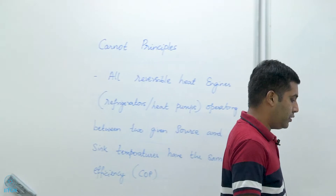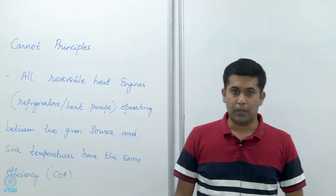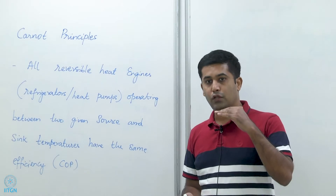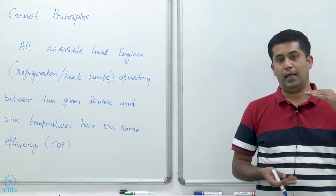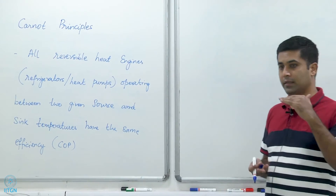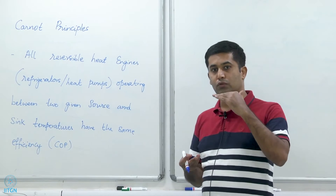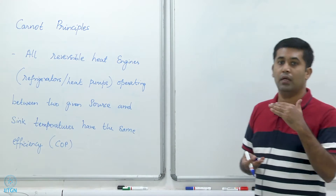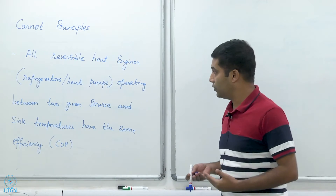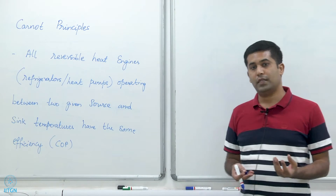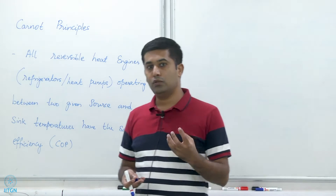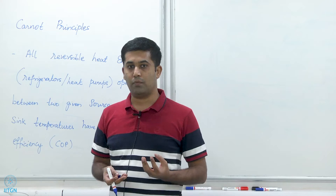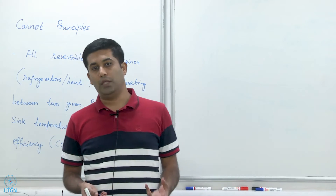All reversible heat engines that operate between two reservoirs at temperatures T_H and T_L — if we fix T_H and T_L, then all reversible heat engines operating between these two thermal reservoirs have the same efficiency. Consequently, all refrigerators and heat pumps operating between two given thermal energy reservoirs also have the same COP.